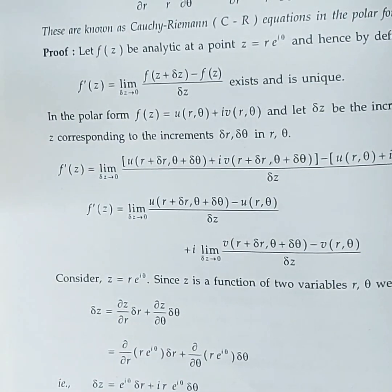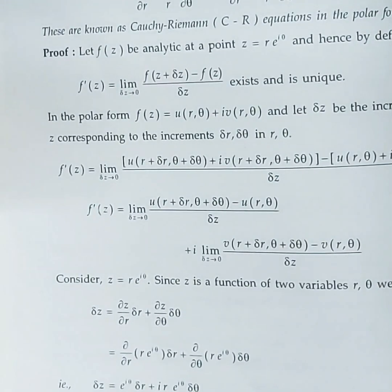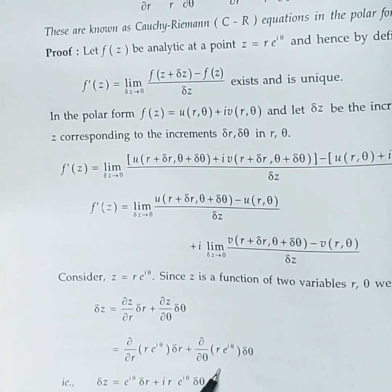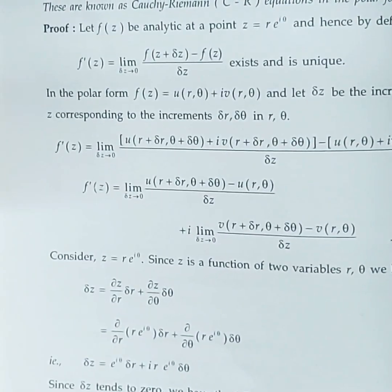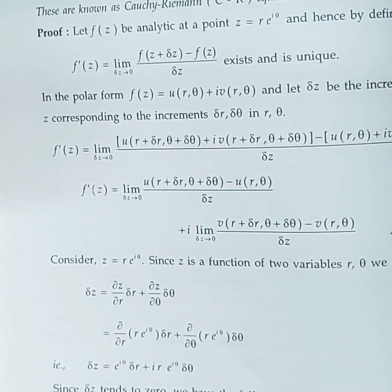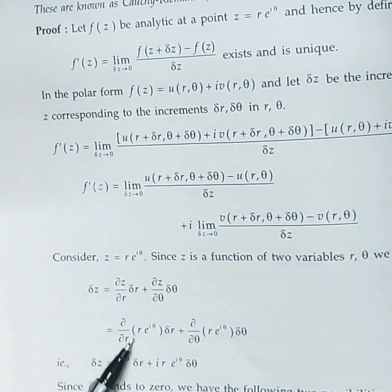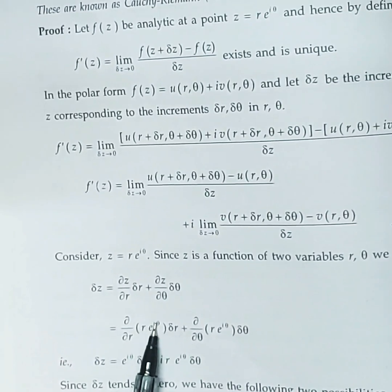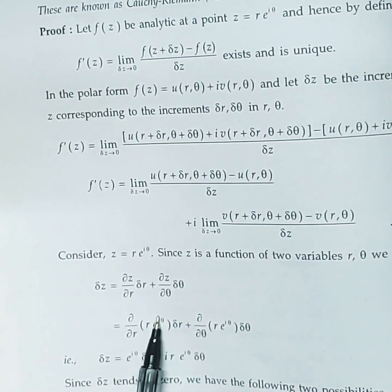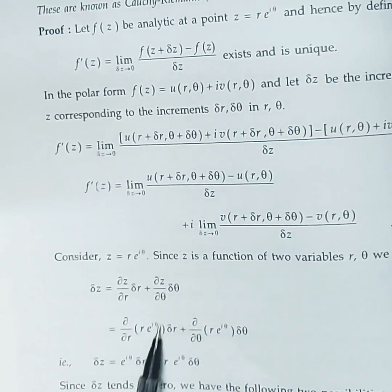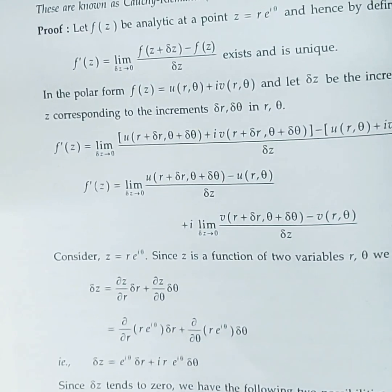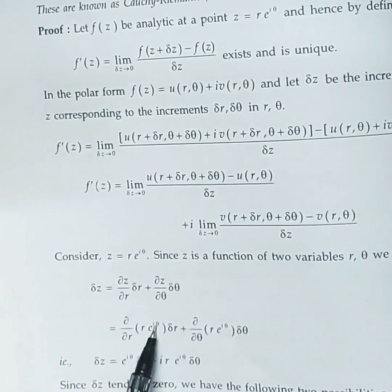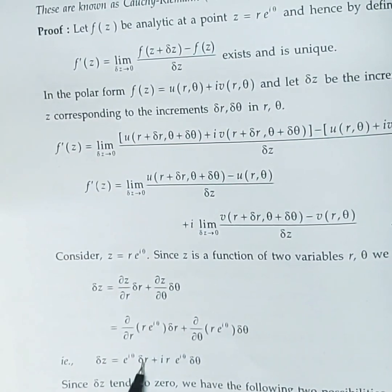We partially differentiate with respect to r, treating e^{iθ} as constant, giving e^{iθ}·1. For the second term, r is constant, so we get r·Δθ·ie^{iθ} from differentiating e^{iθ}. Thus Δz = e^{iθ}·Δr + ir·e^{iθ}·Δθ. As Δz → 0, there are two cases: Δθ = 0 and Δr = 0.